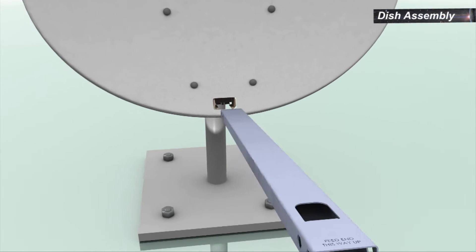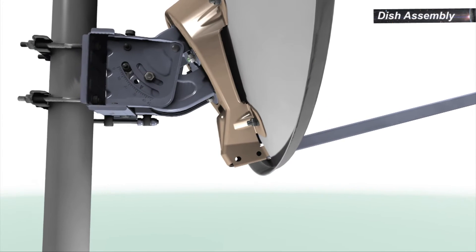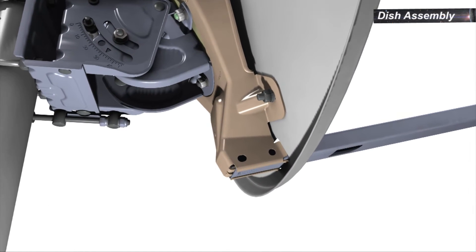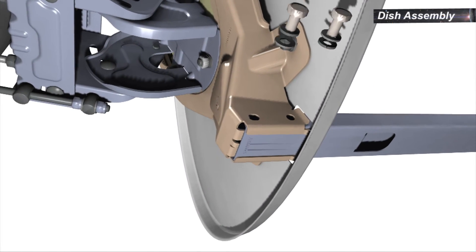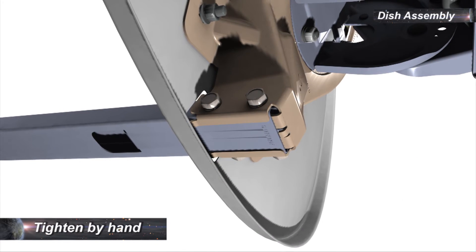To attach the boom arm to the back bracket, insert the correct end of the boom arm into the back bracket all the way until it locks into position. Insert the four bolts with a flat washer and a spring washer, two at each side by hand.